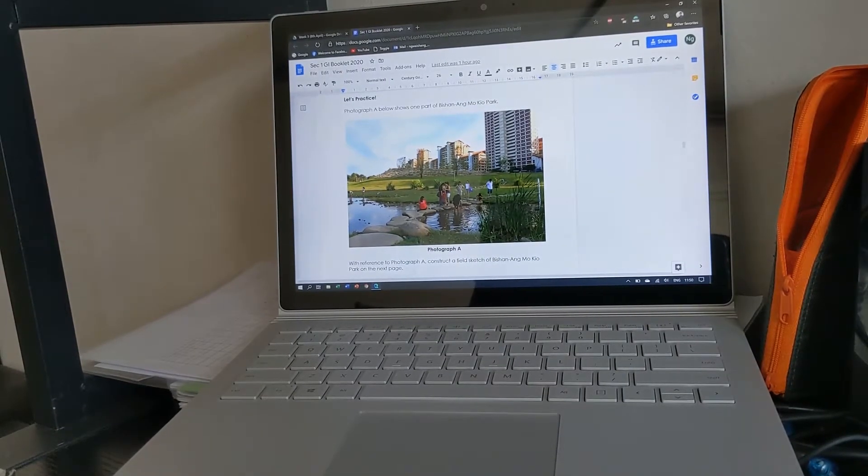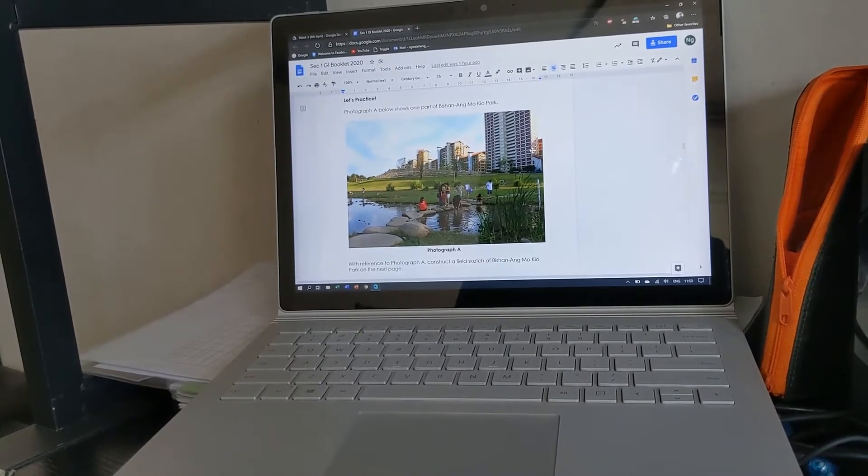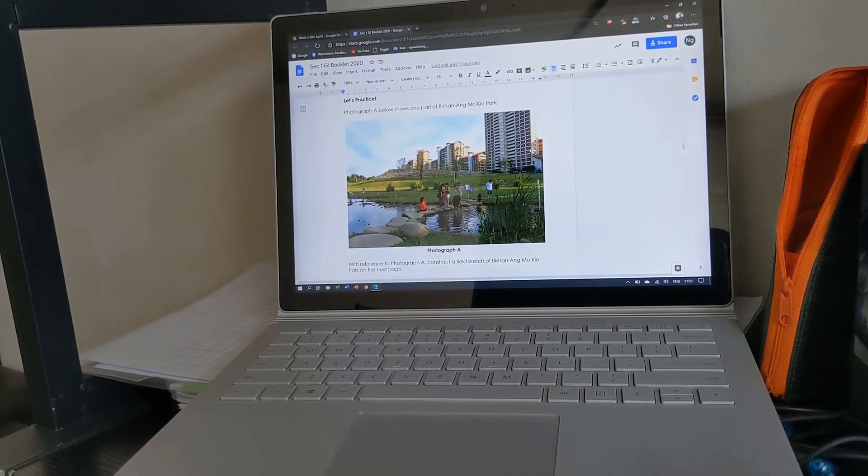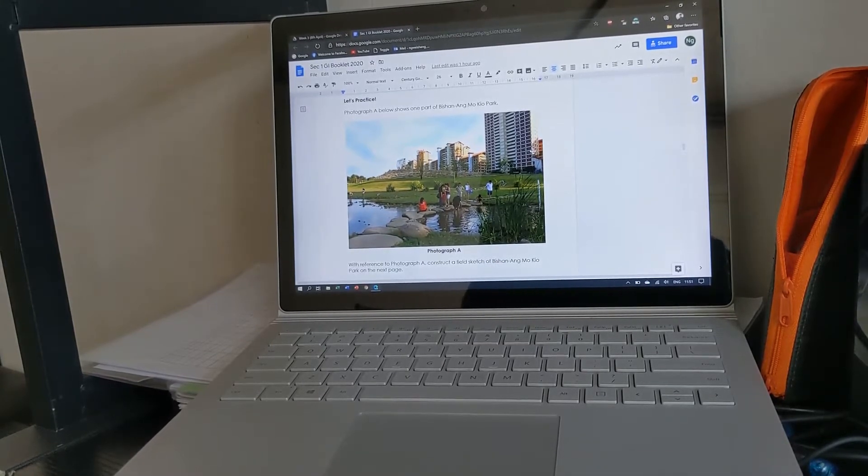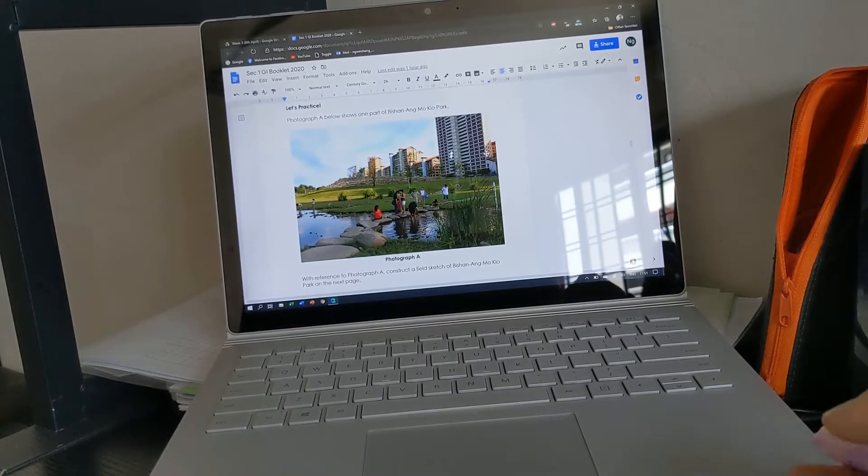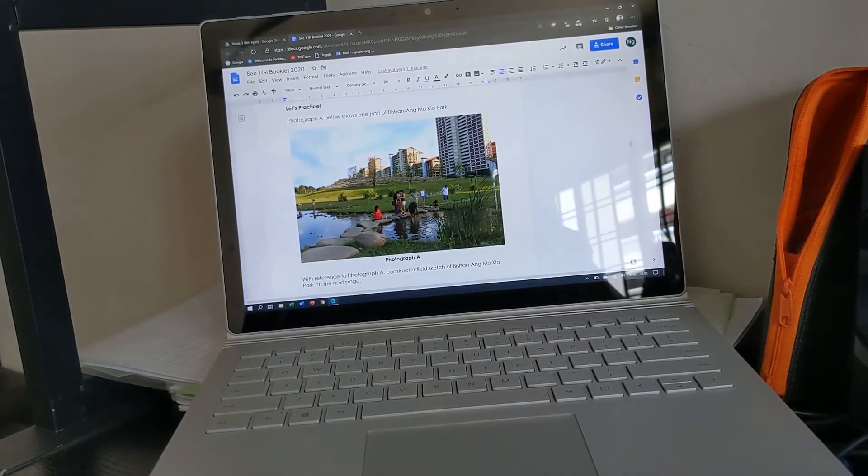Now the purpose of constructing an annotated field sketch is that sometimes there may be important details that you see on the field that may actually contribute to your geographical investigation, the data you collect and the findings you have. Obviously you can take a photograph, but if you were to take a field sketch you can actually put notes and explanations to remind yourself as to what you have seen. That is the purpose of the field sketch, to take down notes and explanations on what is important and what will actually affect the data you have collected. With that, I'll teach you how to draw a field sketch.